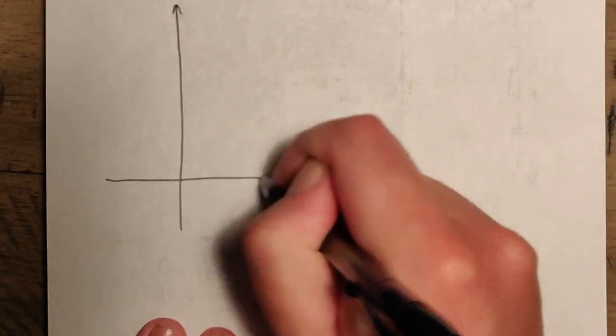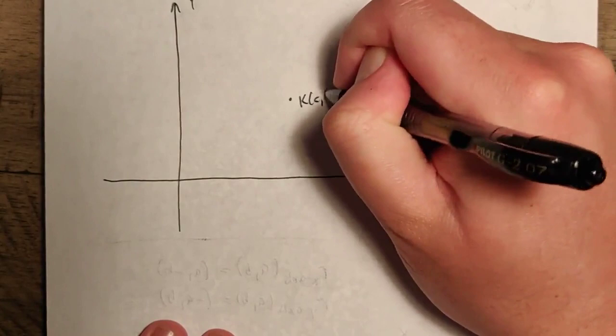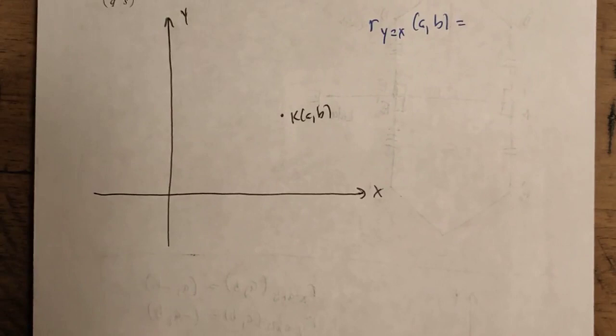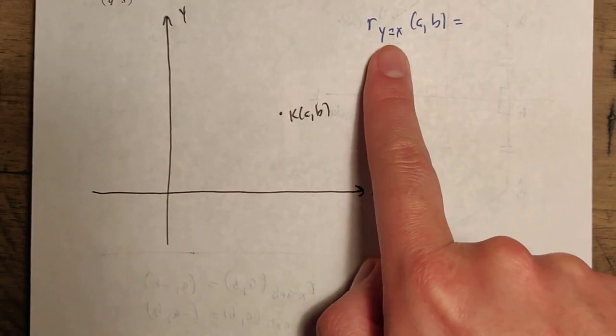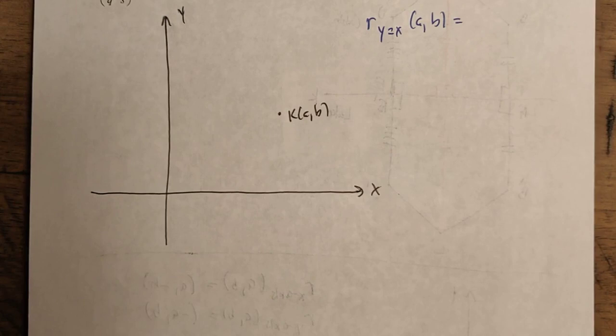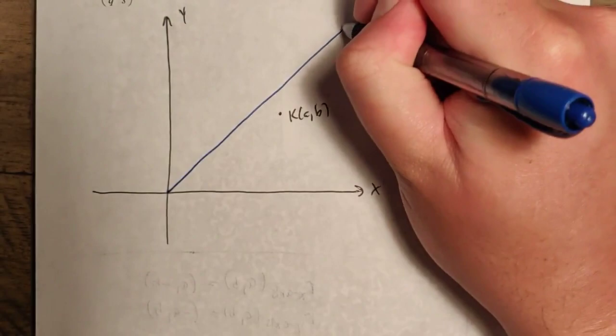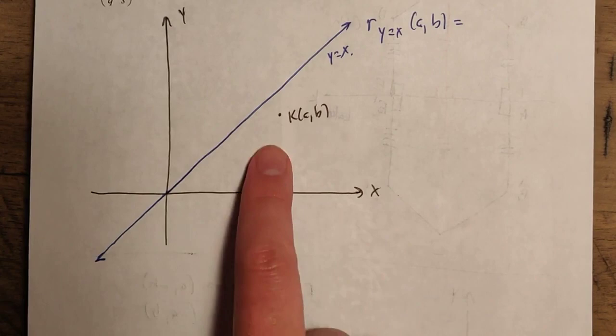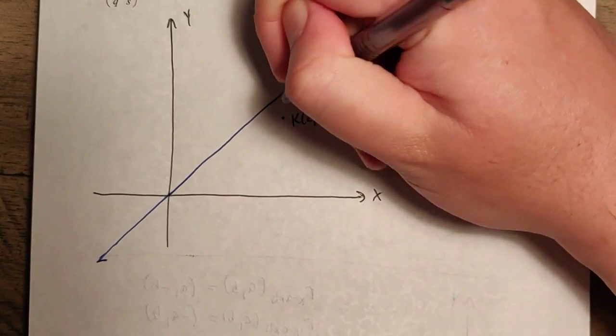Now there's one more thing I really want to focus on: what happens if we reflect over another line? This time, I want to reflect point K over the line y equals x. That line has a slope of 1 and a y-intercept of 0. According to our definition, K prime is going to be somewhere across the line such that y equals x is the perpendicular bisector of K to K prime.